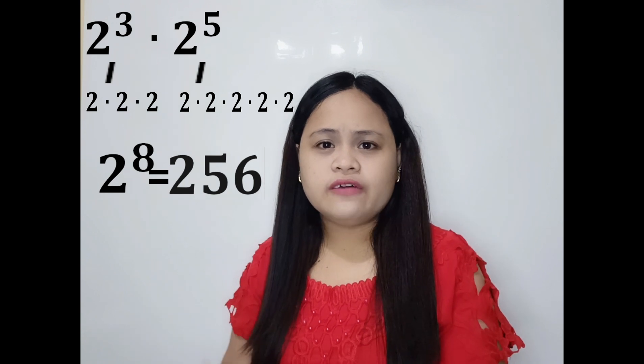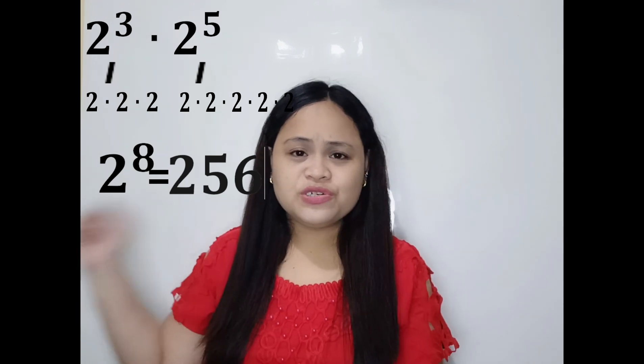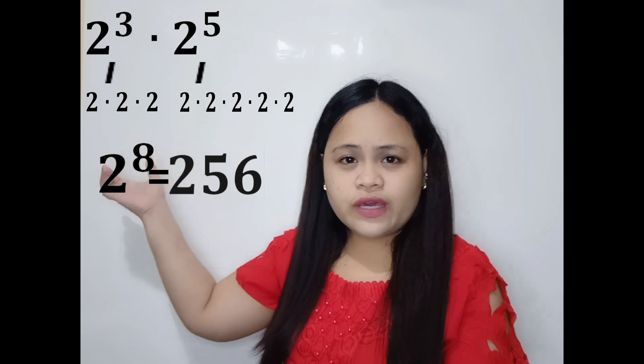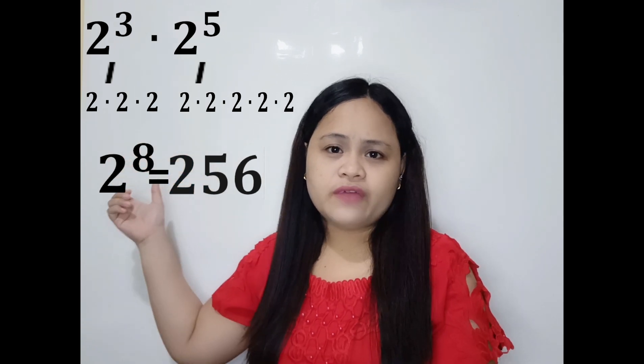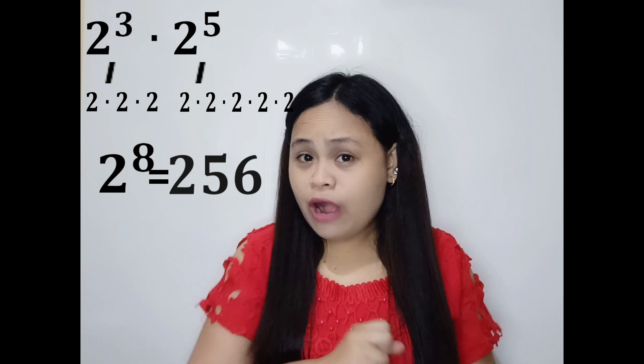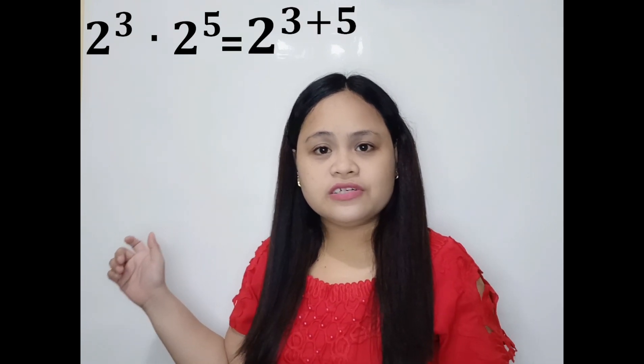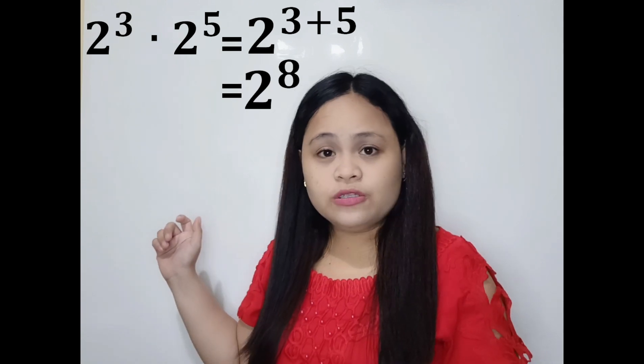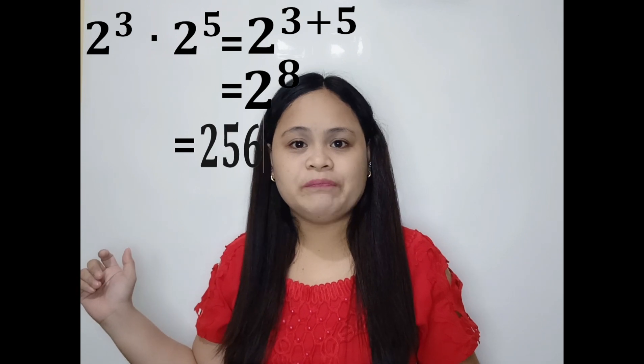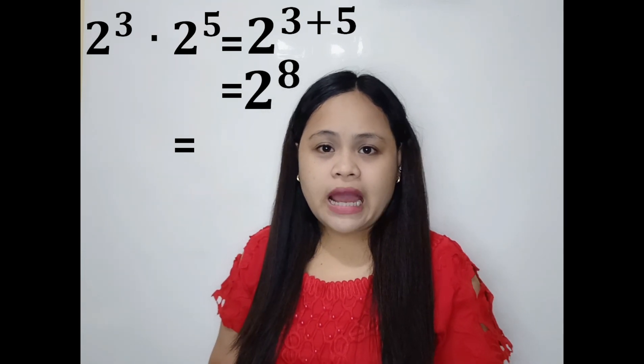Can you think of another way of multiplying two exponential expressions with the same base? Look at the given and compare it to 2 to the power of 8. Why don't we just simply copy the base — kasi parehas naman — and then just add 3 and 5 to get 8. So that gives us 2 to the power of 8. Don't forget to simplify your answer: 2 to the power of 8 is equal to 256. And that is what we call the product rule.